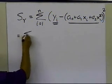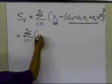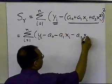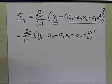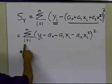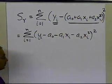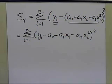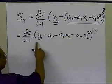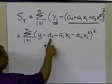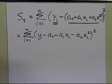Expanding the sum of squared residuals: SR = Σ(i=1 to n) [yi - a0 - a1xi - a2xi²]². I want to minimize this summation. The quantities I can change are a0, a1, and a2. Using differential calculus, I'll take the partial derivative with respect to a0 and set it to zero, with respect to a1 and set it to zero, and with respect to a2 and set it to zero.